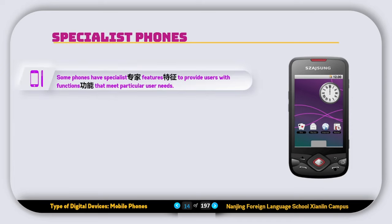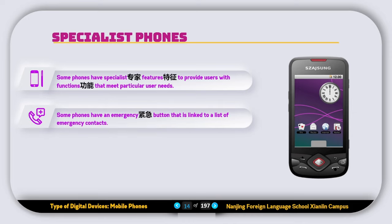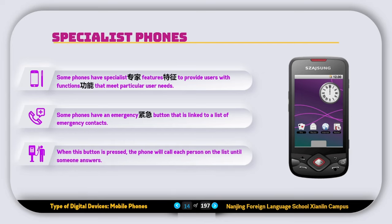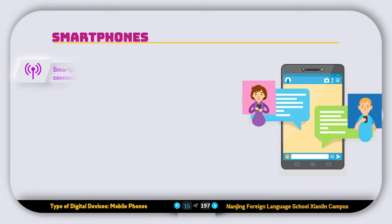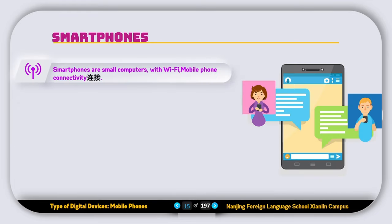The next type of mobile phone is called the specialist phone. Some phones have specialist features to provide users with functions that meet a particular user's needs. For example, some phones have an emergency button linked to a list of emergency contacts — when that button is pressed, the phone will call each person on the list until someone answers.